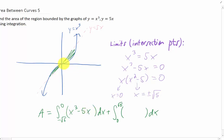In the region where the x values go from 0 to the square root of 5, you'll notice that the top function is 5x, and the bottom function is x cubed.